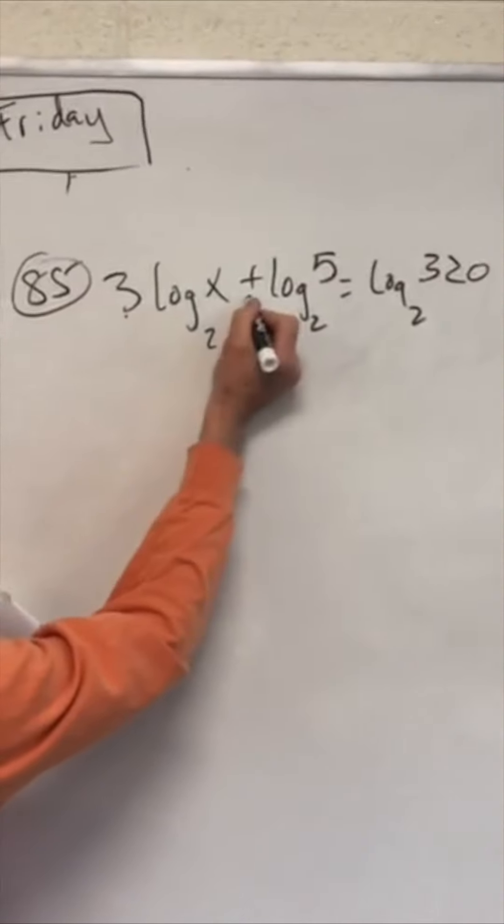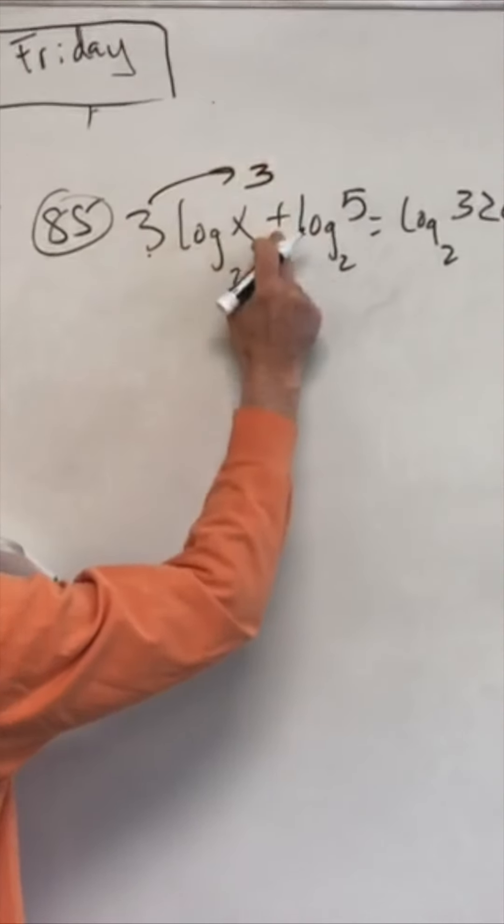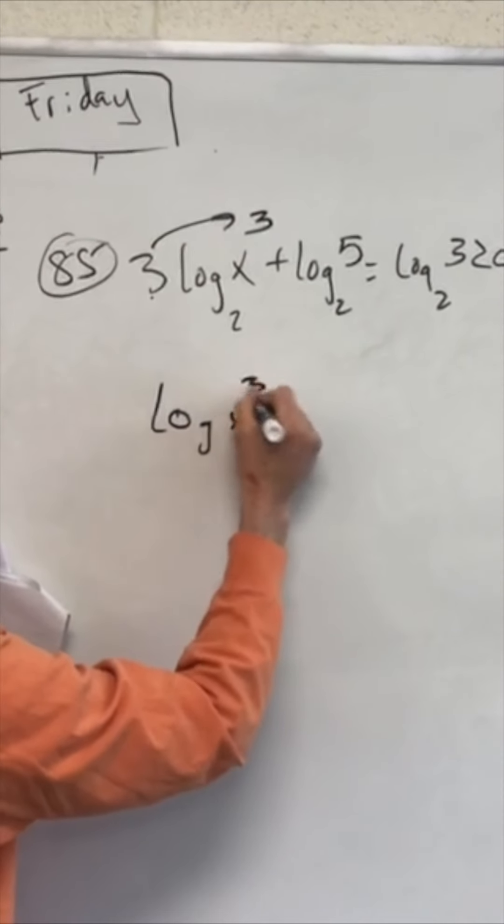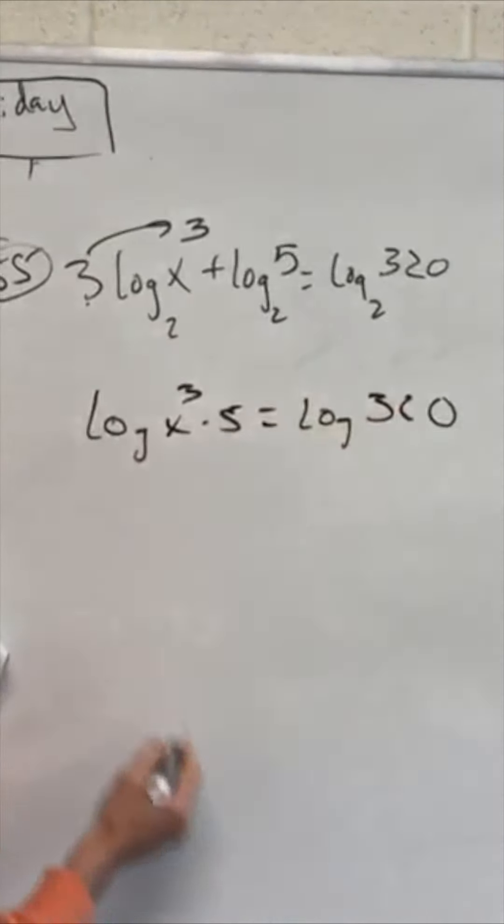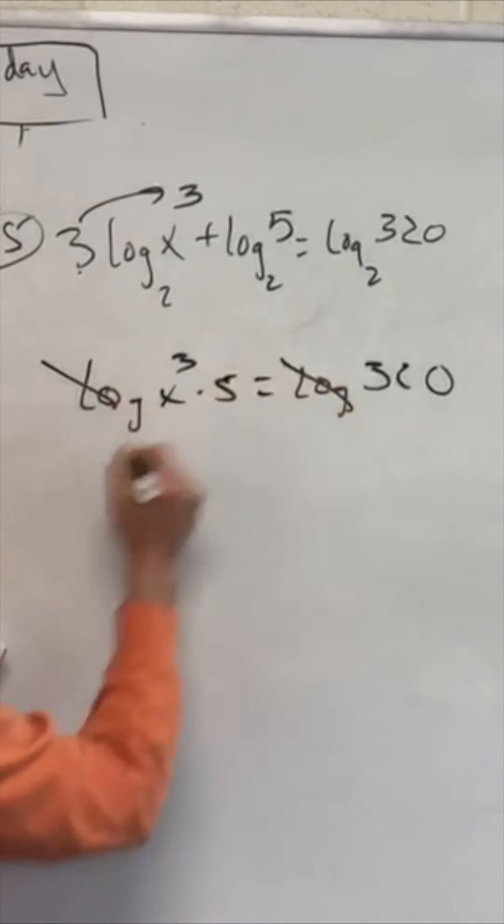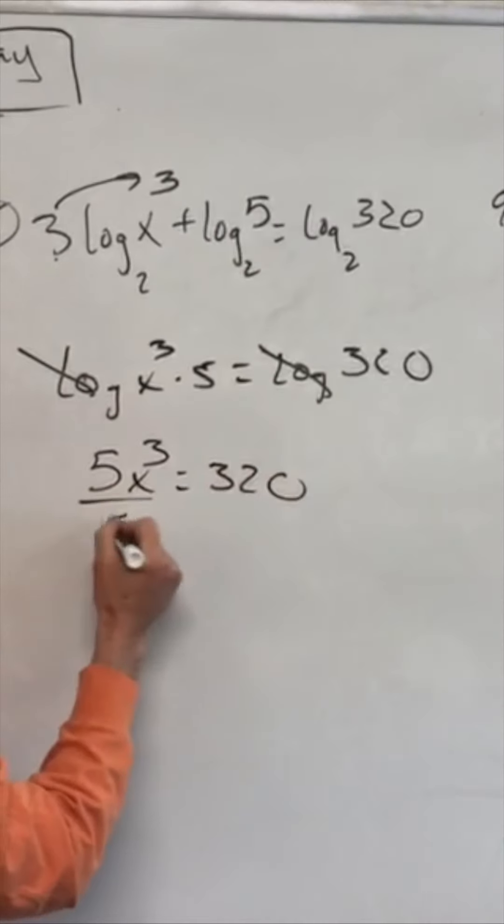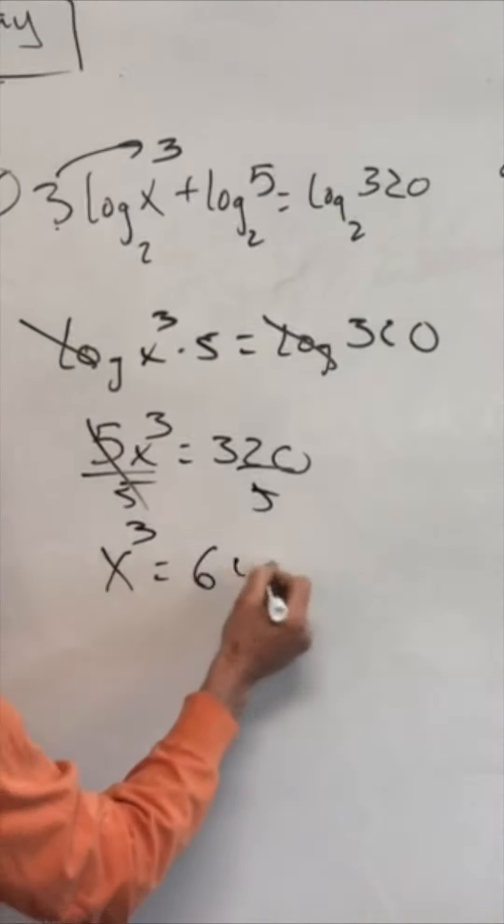We got 3 here and we got plus. And so what we're going to do is first power this up. Plus means to multiply. So we're going to go log of x to the third times 5 equals the log of 320. We drop now the logs. Doink. Doink. We get 5x cubed equals 320. We divide by 5 and we get x cubed equals 64. Cubed. Cubed. And x equals 4. Bam.